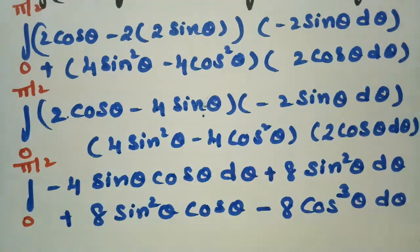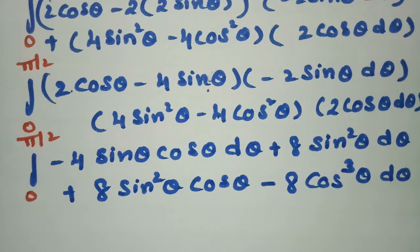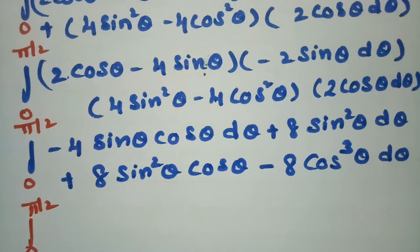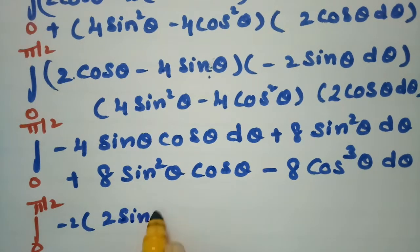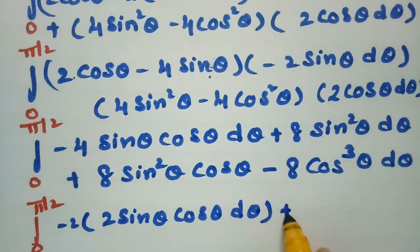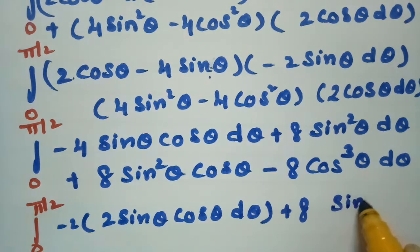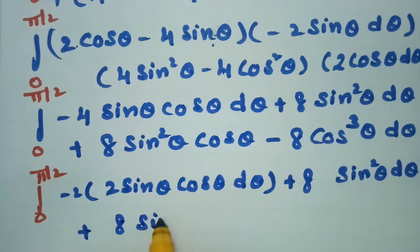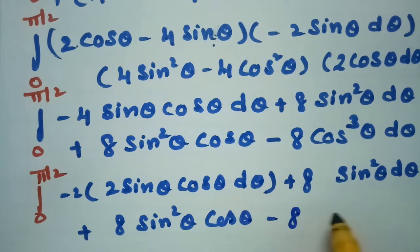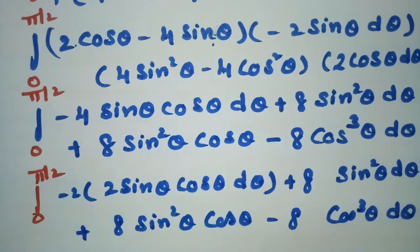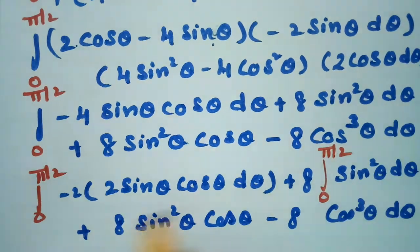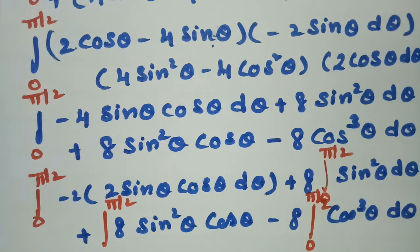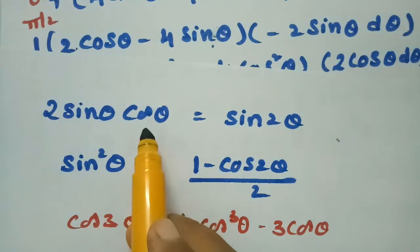Now I am going to use some formulae. The integral from 0 to π/2 can be written by taking minus 2 common, giving 2 sin θ cos θ dθ, plus 8 times the integral of sin² θ dθ, plus 8 times sin² θ cos θ dθ, minus 8 times cos³ θ dθ. Now I am going to split each and every integral, each from 0 to π/2.